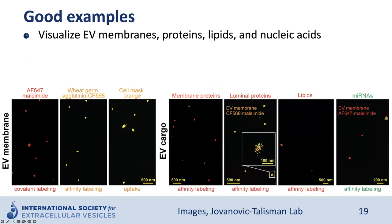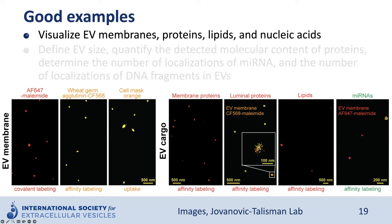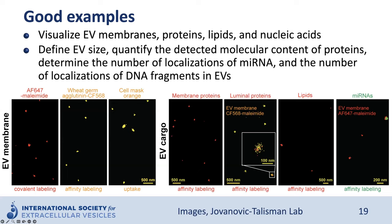EV cargo — such as membrane proteins, luminal proteins, lipids, and nucleic acids — can also be visualized and quantified. For example, cargo molecules were affinity-labeled and detected with SMLM. Multicolor imaging can be used to assess the fraction of EVs that contain a cargo of interest: EV membrane can be labeled in one color and EV cargo in a different instrument-compatible color. SMLM is a quantitative method, with excellent reports in the literature of defining EV size, quantifying detected molecular content of proteins, determining number of localizations of microRNA, and number of localizations of DNA fragments in EVs.